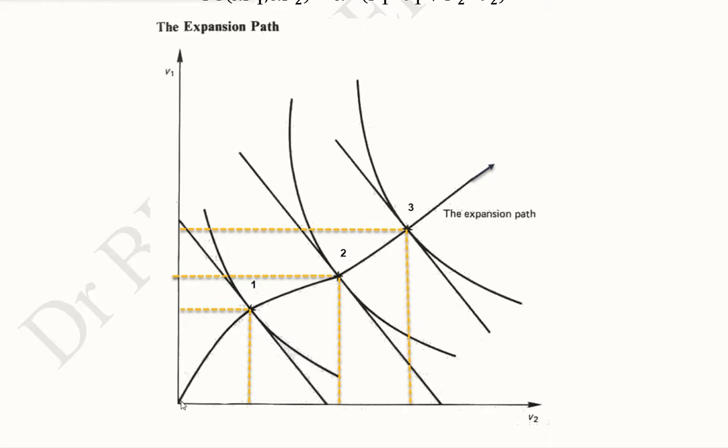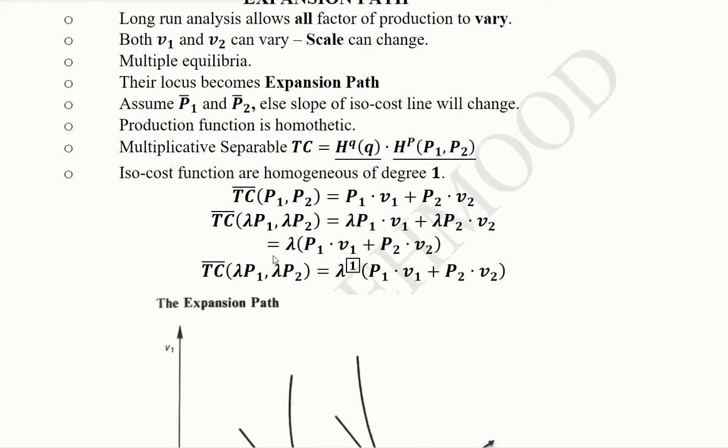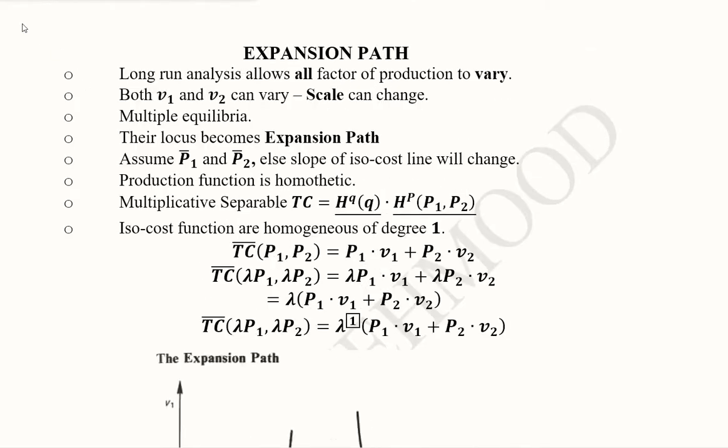As you can see, we are starting the ray from zero, that is the origin, and we are passing it through the various equilibria that we have. And this ray actually is called as the expansion path because it guides us about the expansion of the output of the firm in the long run. So this was the concept of expansion path in production economics. Thank you.